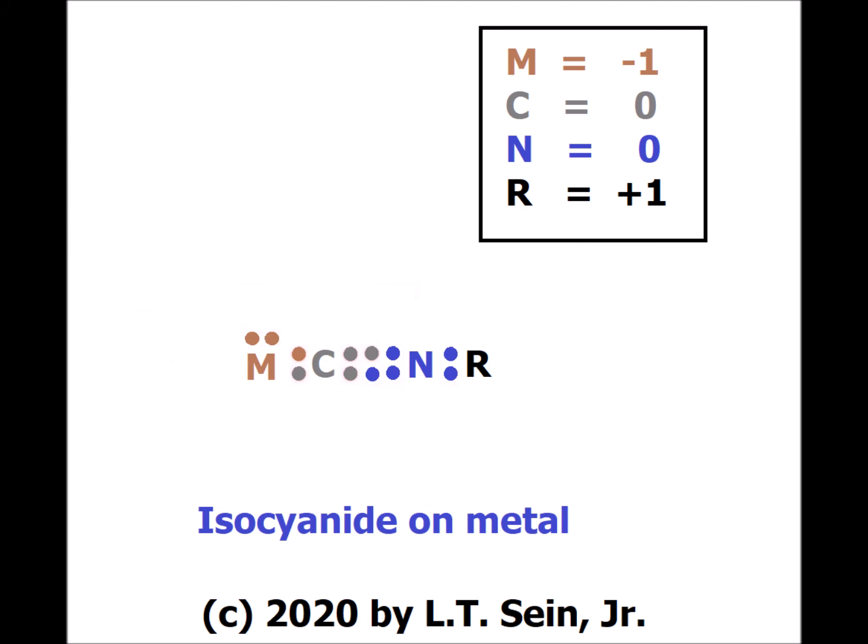Here the isocyanide binds to the metal through a donated lone pair — a dative or coordinate covalent bond that is sigma in nature. This leads to the formal charge of the metal now being minus one. Carbon and nitrogen are at zero, and the formal charge on the alkyl group R is plus one.